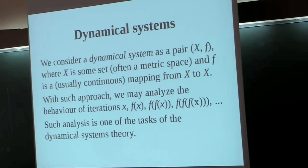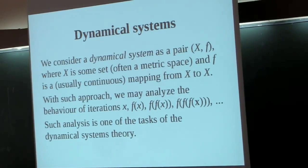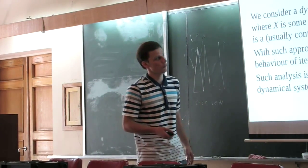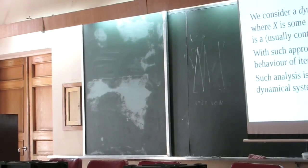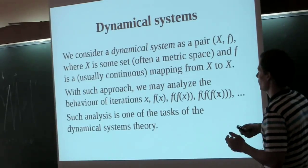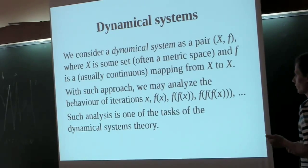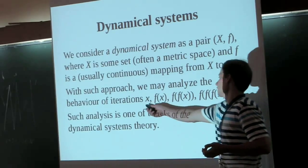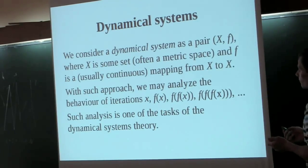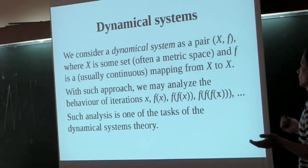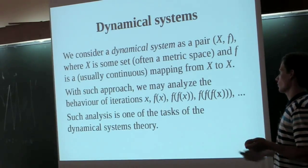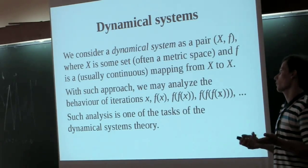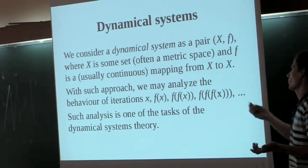Firstly, I say what I mean as a dynamical system. I mean a pair of a set X and a map F which maps this set into itself. And this construction allows us to study the iterations of the point X under the action of the function F. The initial point X may be arbitrary if it naturally belongs to X.